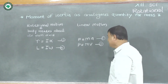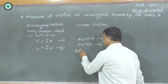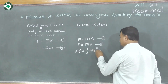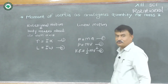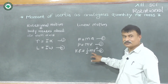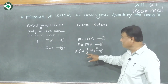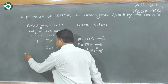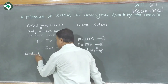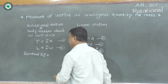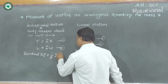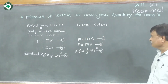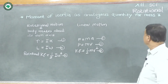Similarly, if we consider kinetic energy: kinetic energy of a body has formula half mv², where v is the velocity and m is the mass. In rotational motion there is rotational kinetic energy, which is equal to half I omega². In this way we study the analogy of moment of inertia with mass.